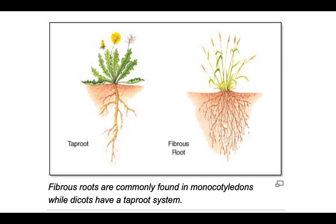The way that the roots are structured is also different. The tap root is used in dicots, meaning it has a single root with branching from that root, and the root is also thicker because it only uses that single root. Then you look at the fibrous roots of the monocotyledons — as you can see, there are multiple sets of roots.